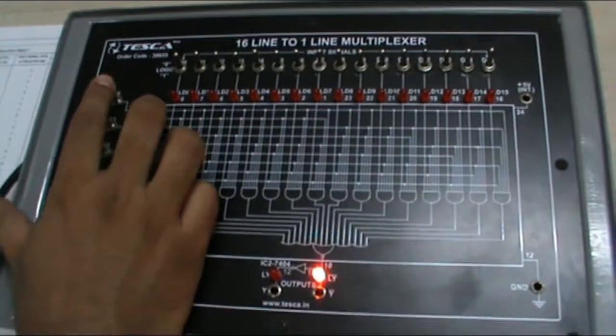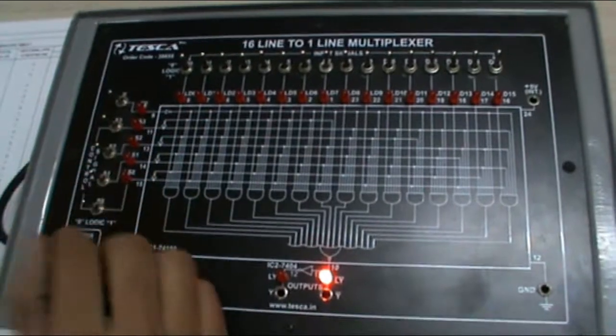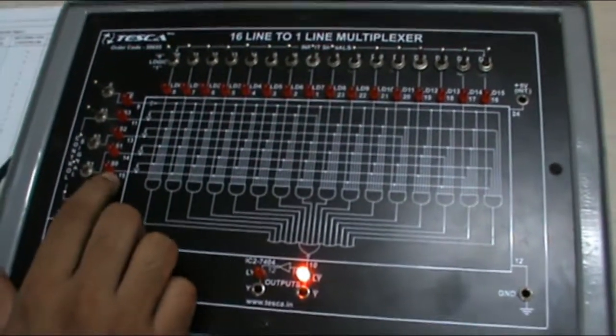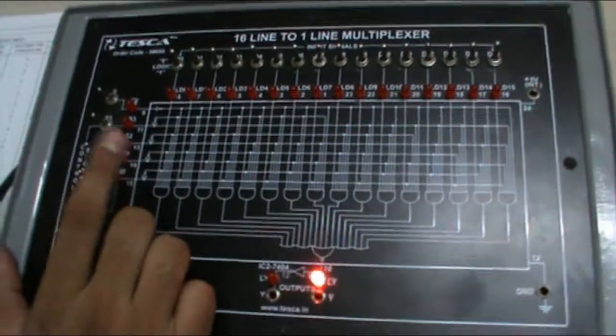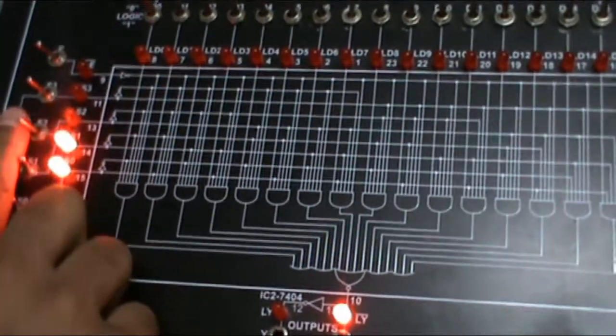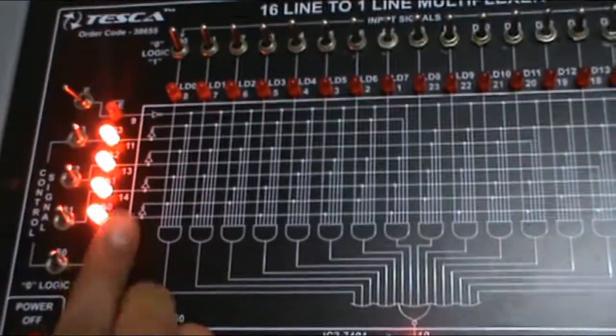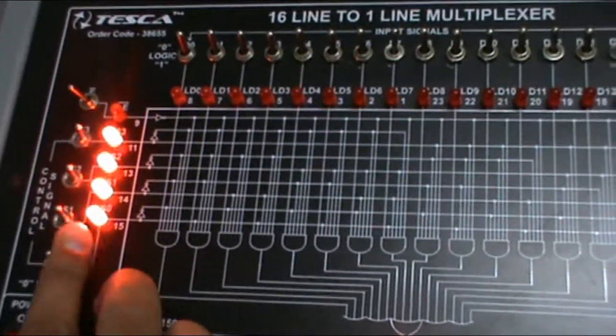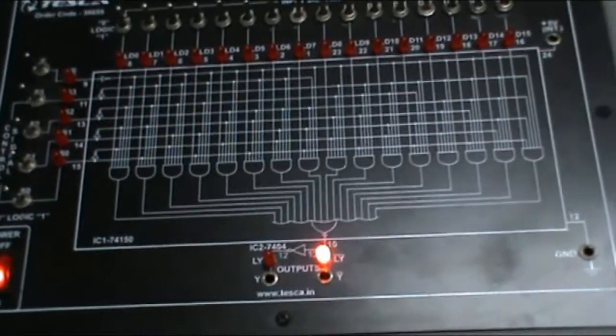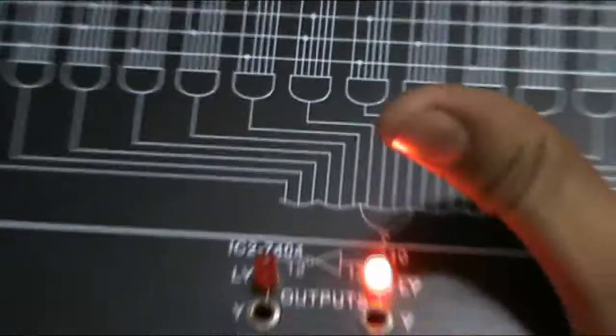Now put this enable switch to 0 logic. Now give these 4 input control signals to different values from 0000 to 1111. Give all the 16 values according to the manual from 0000 right up to 1111. Give all these values and these LEDs.